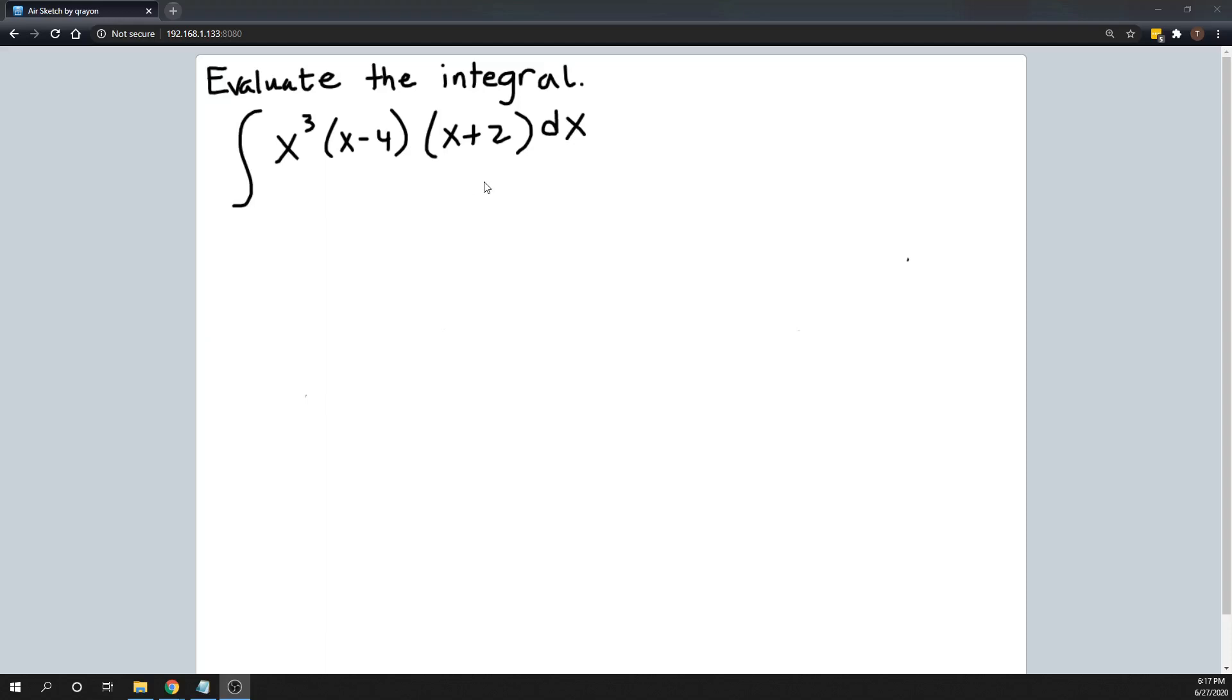First just some algebra to simplify this. So I am going to multiply this factor x minus 4 times this factor x plus 2. Just FOIL that out. So x times x will give me x squared. The outer is x times 2, so that'll be 2x. The inner is minus 4x. And last times last will be minus 8.